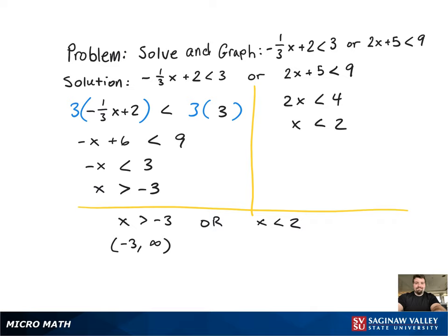And what ends up happening is, since it's a union, it ends up resulting in being the solution set from negative infinity to positive infinity, or all real numbers.